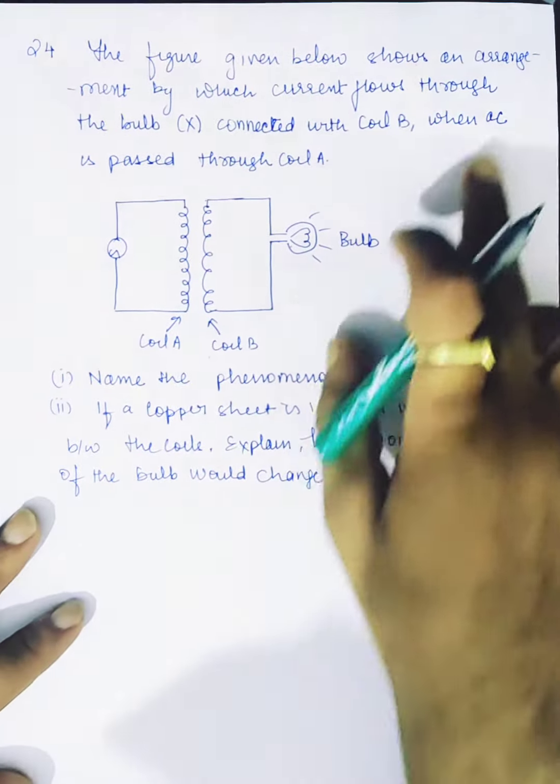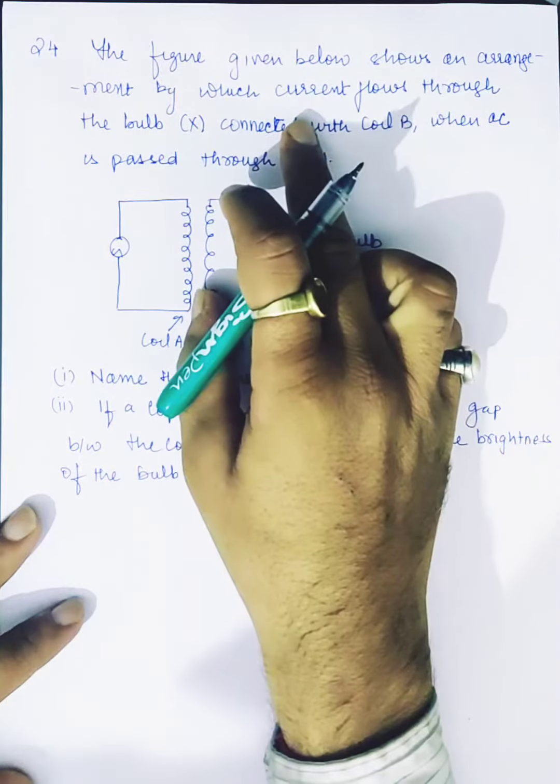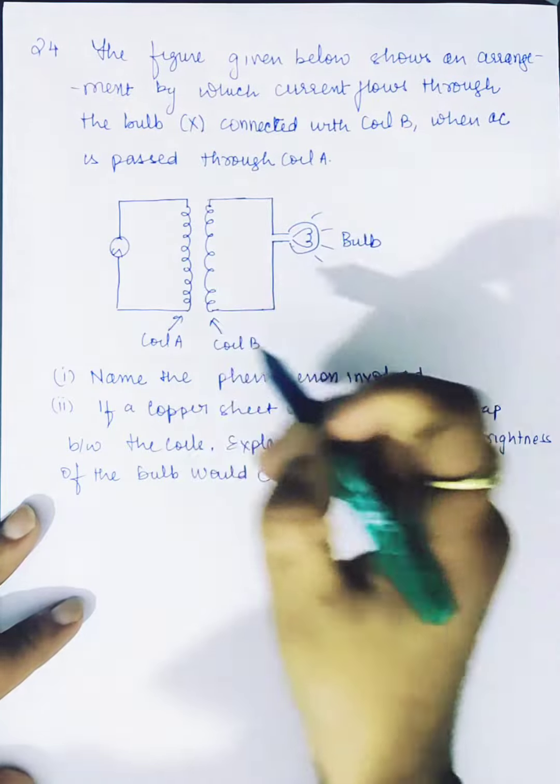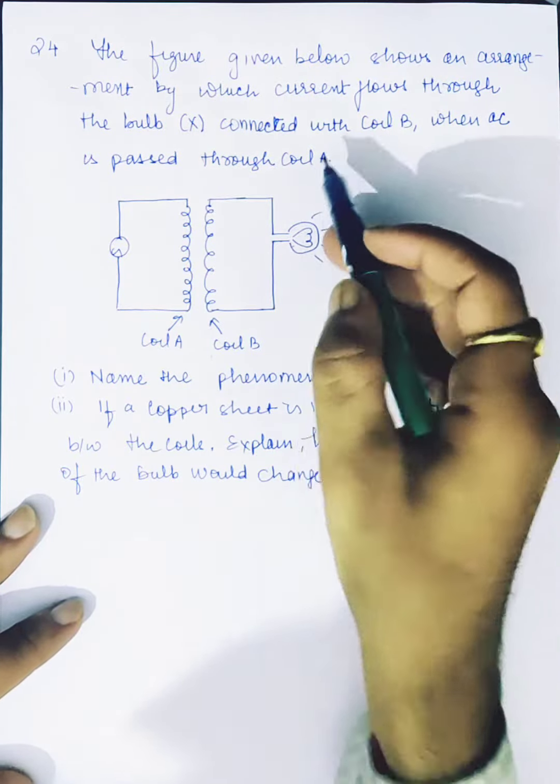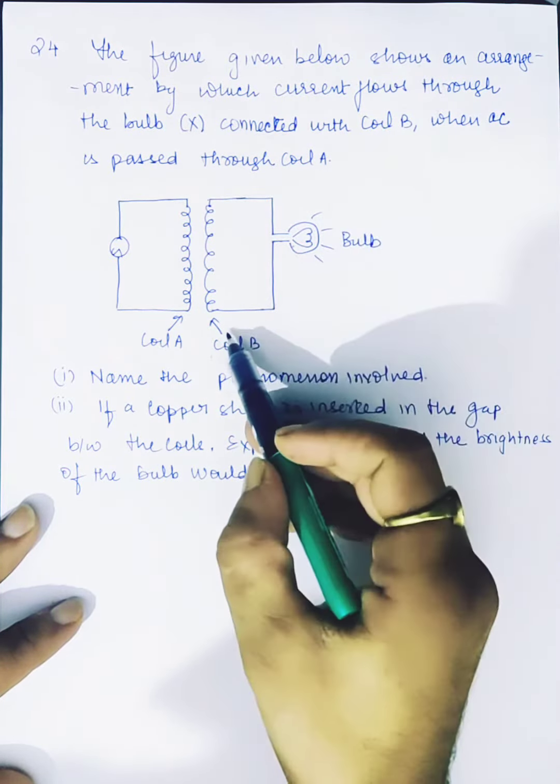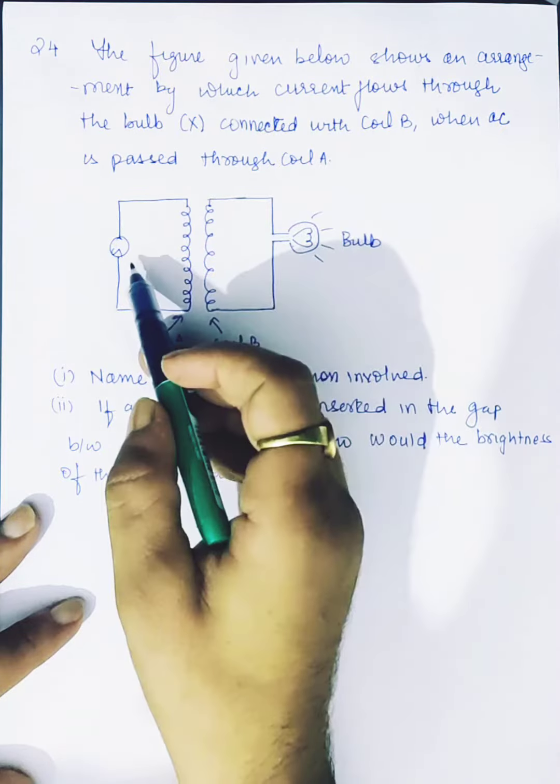The figure given below shows an arrangement by which current flows through the bulb X connected with coil B when AC is passed through coil A.